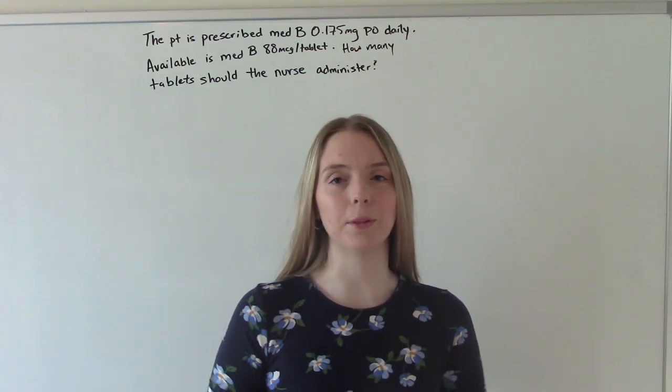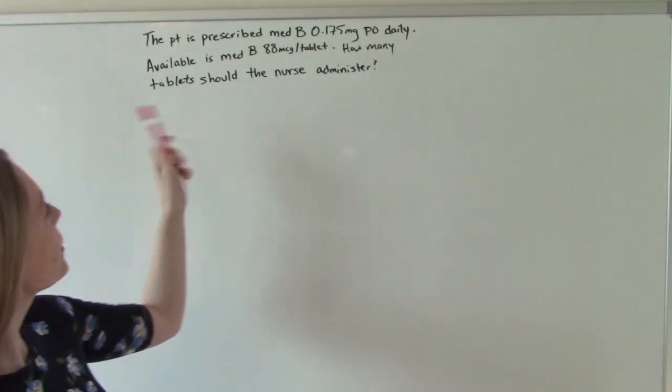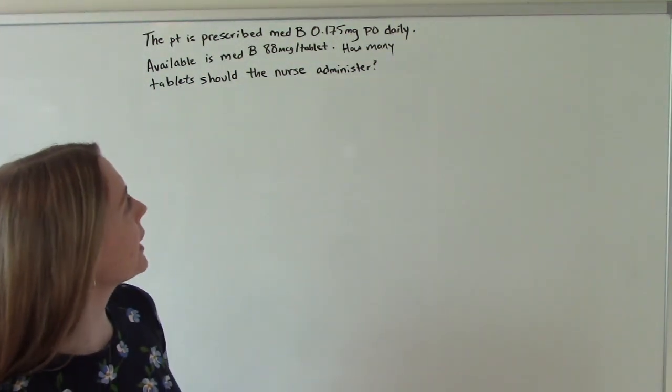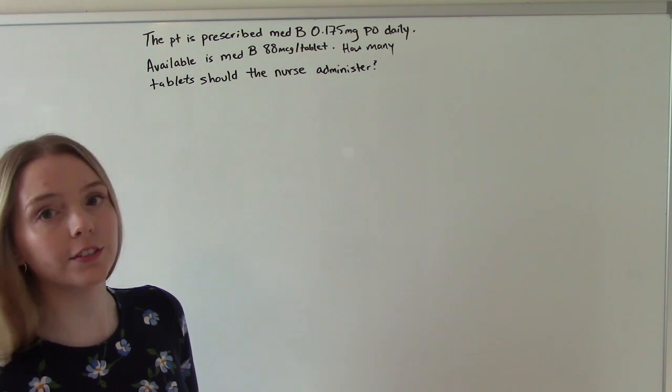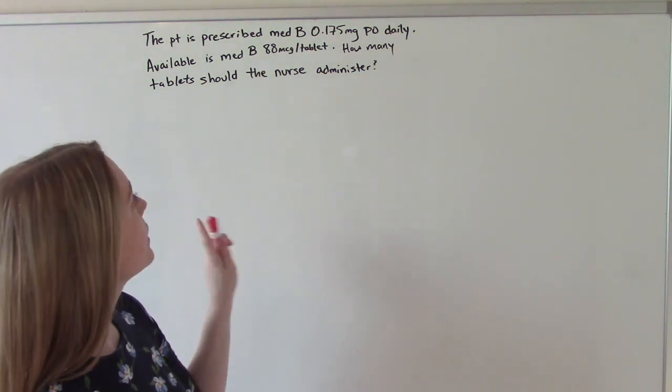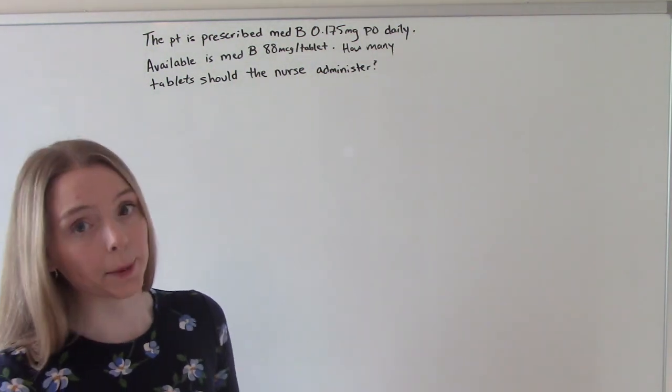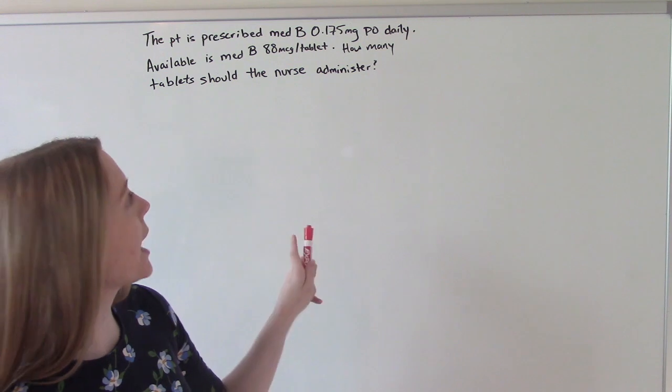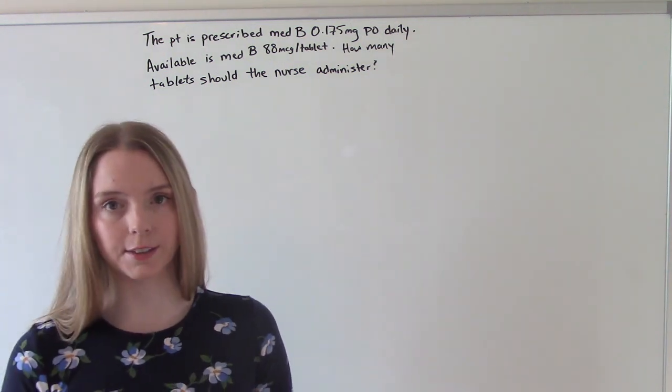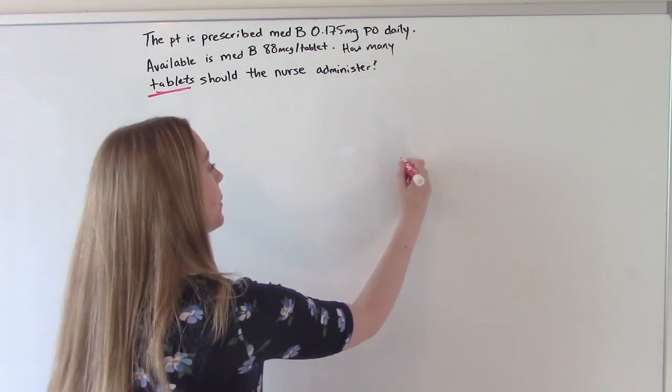Our next problem is with micrograms to milligrams. So we have the patient, they're prescribed medication B, 0.175 milligrams PO daily. Available is medication B in 88 micrograms per tablet. How many tablets should the nurse administer? So what are we looking for in our answer? We're looking for tablets.